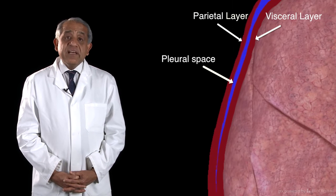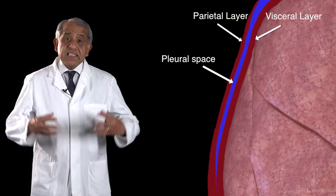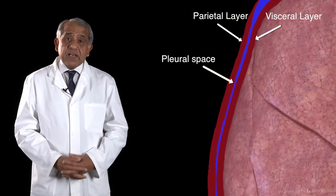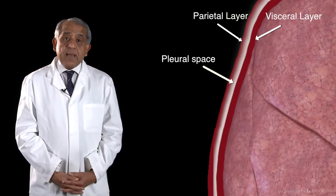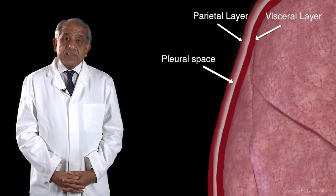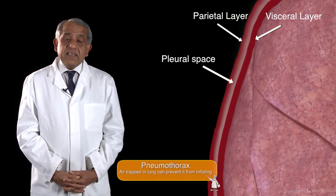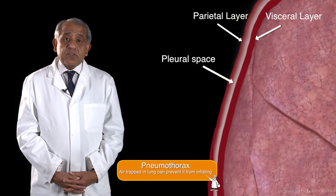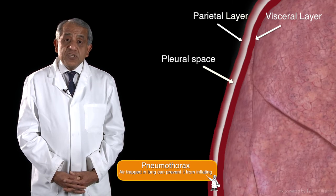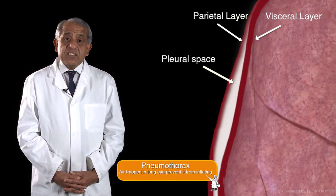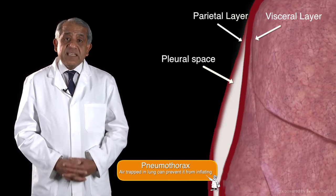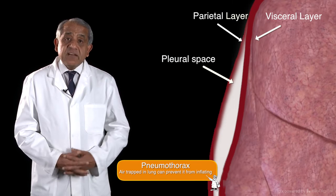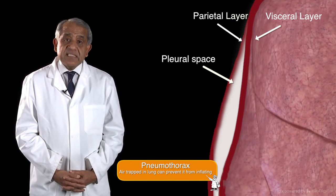However, in abnormal situations, things can enter the pleural cavity. For example, air can be trapped in the pleural cavity. This condition is called pneumothorax, and a large pneumothorax is a serious condition because it compresses the underlying lung and prevents the lung from being inflated.